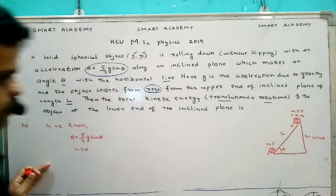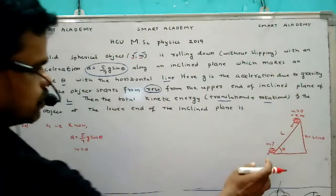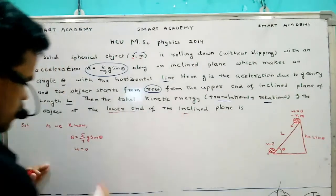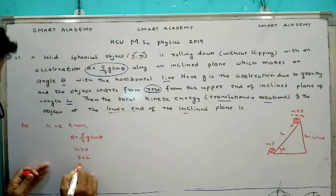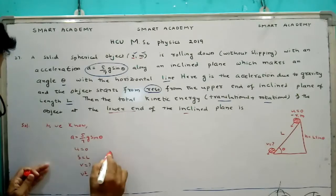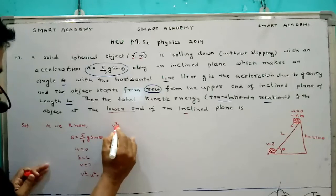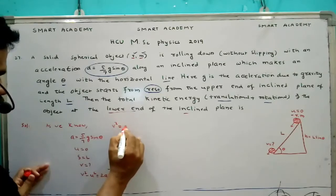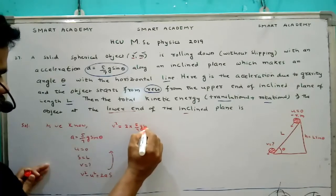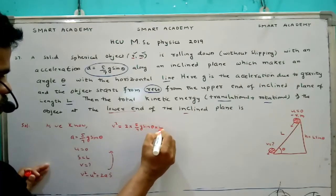Okay, then u equal to zero. So first we have to find what is this final velocity at the lower end of the inclined plane here. So the displacement is L. V we have to find, so v square minus u square equal to 2as. So from this v square equal to 2 into a, 5 by 7 g sine theta into L.